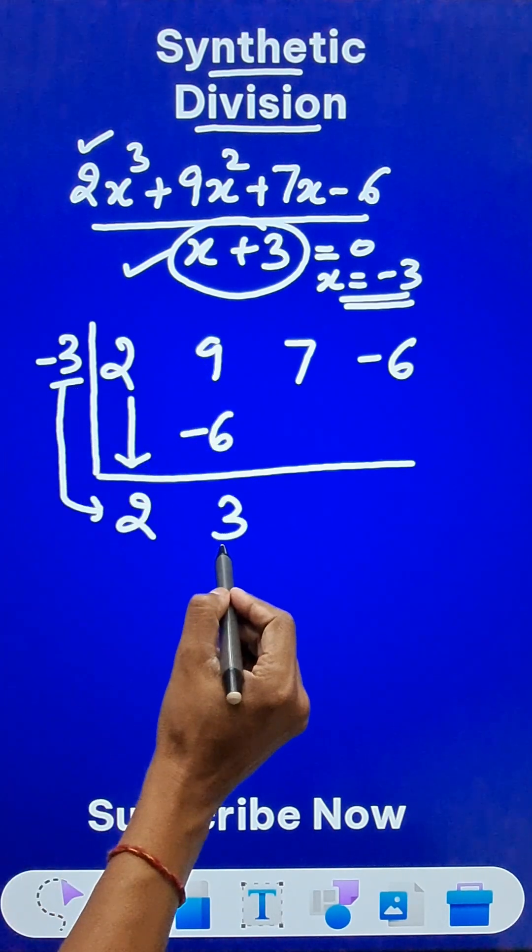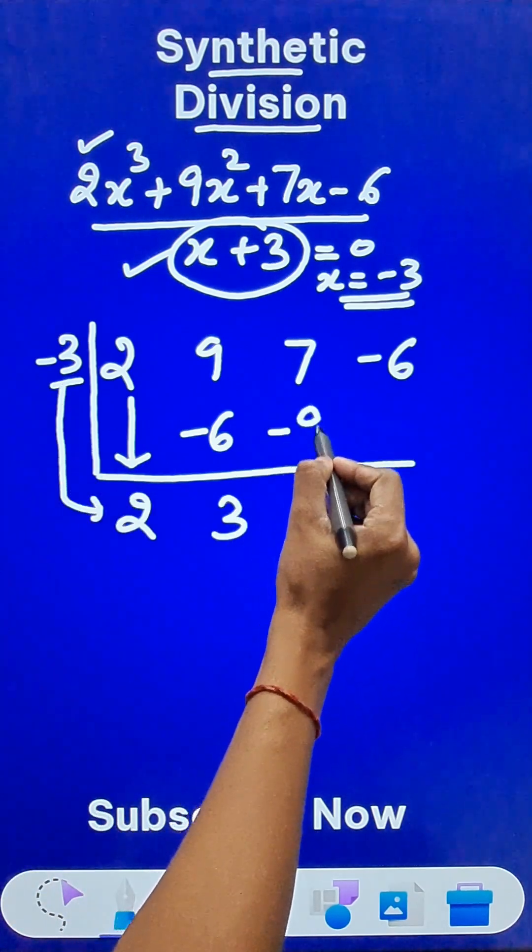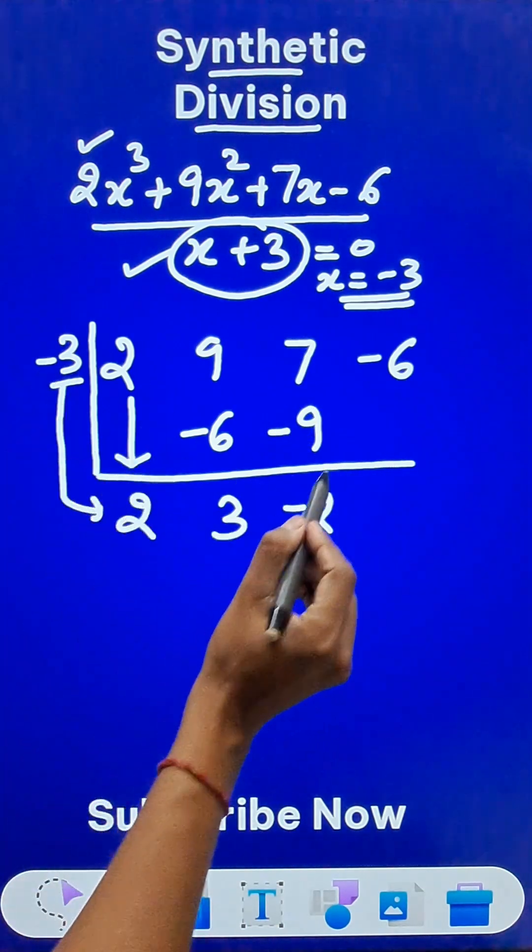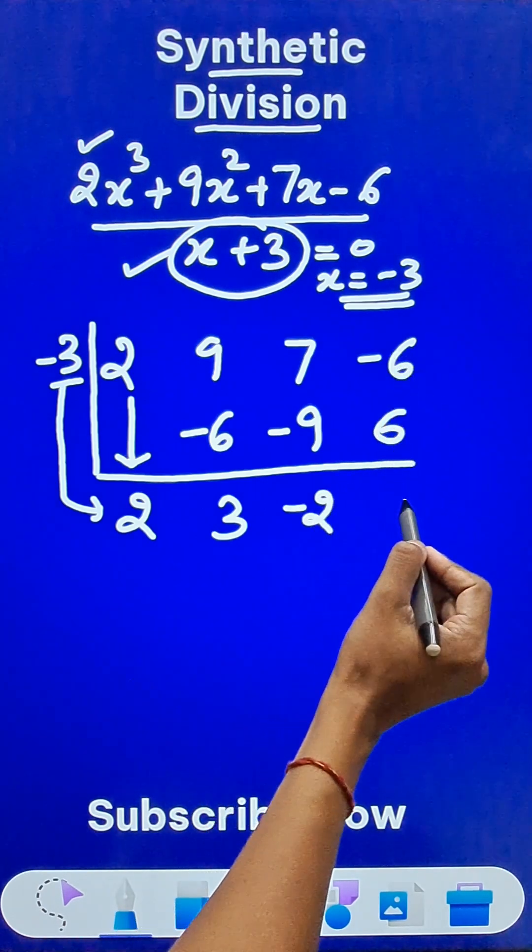Now, multiply -3 by 3, you get -9, write it below 7. 7 - 9 is -2, and then -3 times -2 is 6, and -6 + 6 is 0.